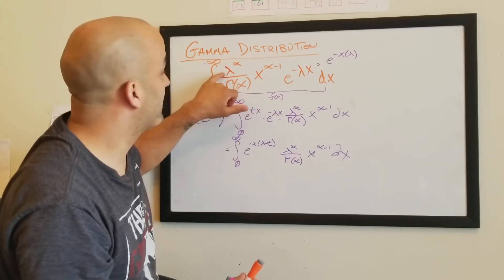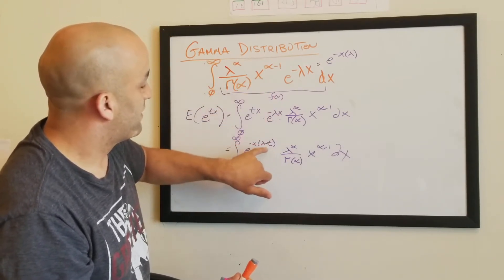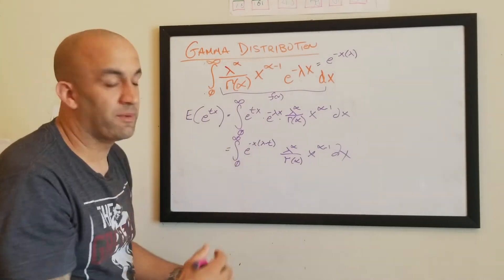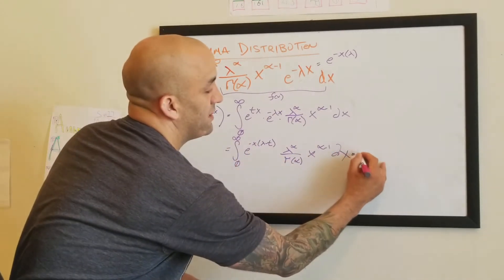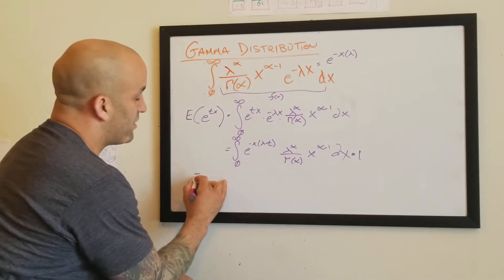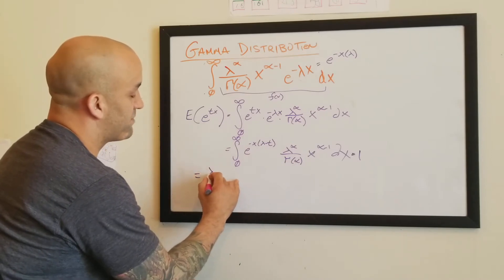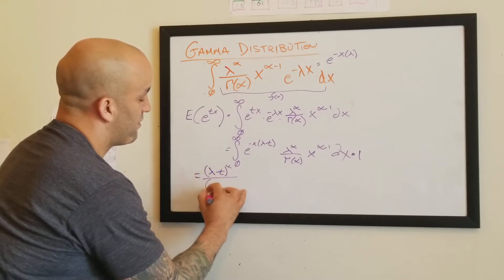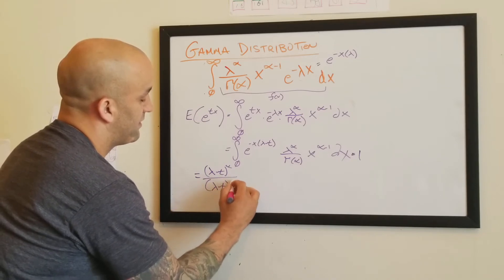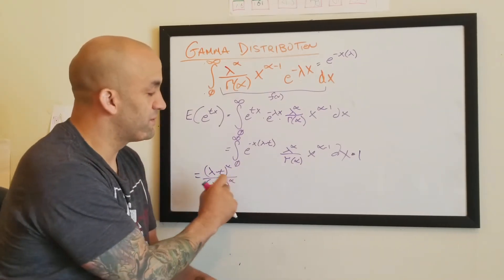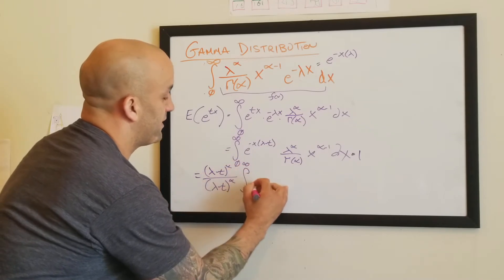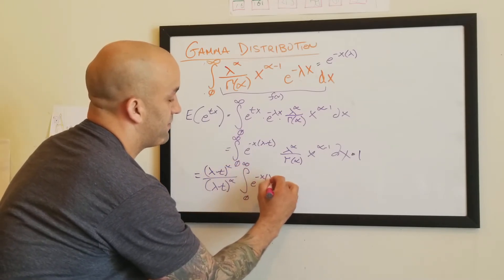So what we've got to do is find some way to get lambda minus t into here. We can use a little trick — we're going to multiply, and remember this is all going to equal one. So what I'm going to do is multiply both sides by lambda minus t to the alpha over lambda minus t to the alpha, because this is just one. All we're doing is multiplying this whole thing by one. And then we just fill the whole thing back in from zero to infinity, e to the negative x times lambda minus t.